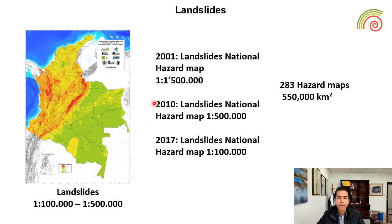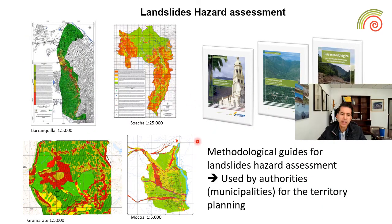For example, in landslides, we have produced different hazard maps for landslides in Colombia at different scales. With respect to hazard assessment, we have also produced some methodological guides for hazard assessment. Those guides have been used by authorities and municipalities for planning and territory planning.